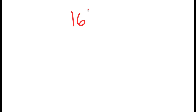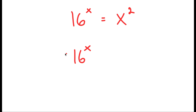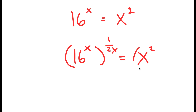In this video, I'm going to solve the equation 16 to the power of x is equal to x to the power of 2. To solve this, I'm going to first start by taking the power of 1 over 2x on both sides. So I get 16 to the power of x to the power of 1 over 2x is equal to x to the power of 2 to the power of 1 over 2x.